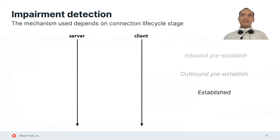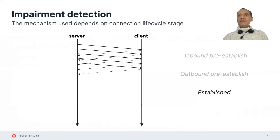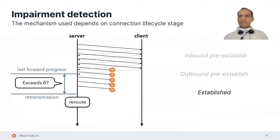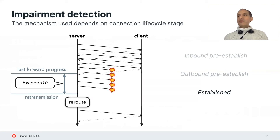During the established phase, CPR triggers a reroute whenever the stream of acknowledgements for freshly sent data is interrupted. CPR marks a connection as making forward progress whenever an acknowledgement is received for data that was sent but had not yet been acknowledged. Before each retransmission, CPR checks for how long a connection has been unable to make forward progress. If this value exceeds a threshold delta, it declares a stall and selects a new egress path.